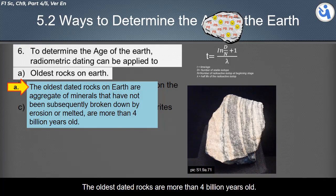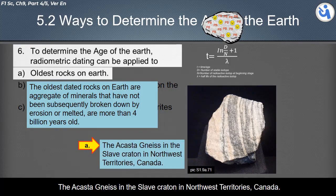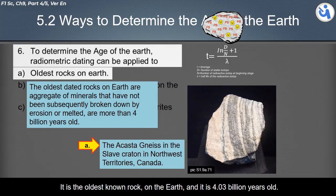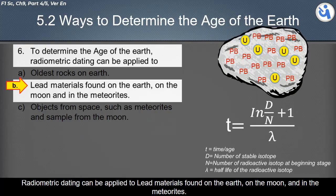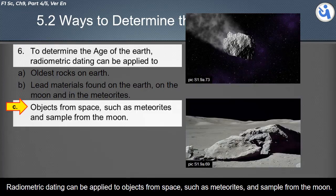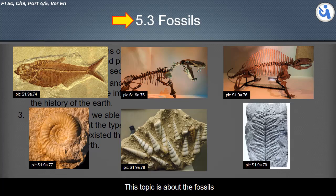The oldest dated rocks are more than four billion years old. The Acasta Gneiss in the Slave Craton in Northwest Territories, Canada is the oldest known rock on the earth, and it is 4.03 billion years old. Radiometric dating can also be applied to lead materials found on earth, on the moon, and in meteorites — that is, objects from space such as meteorites and samples from the moon.